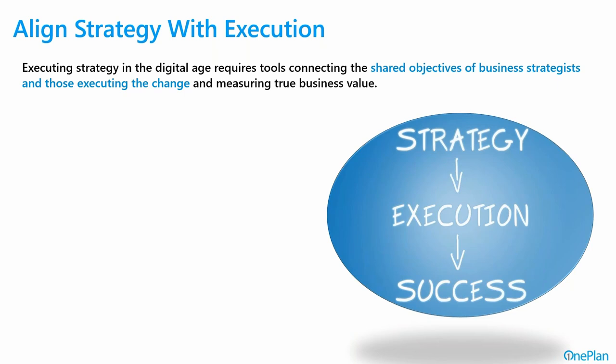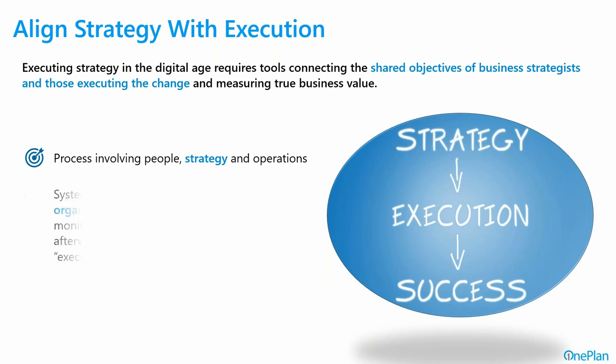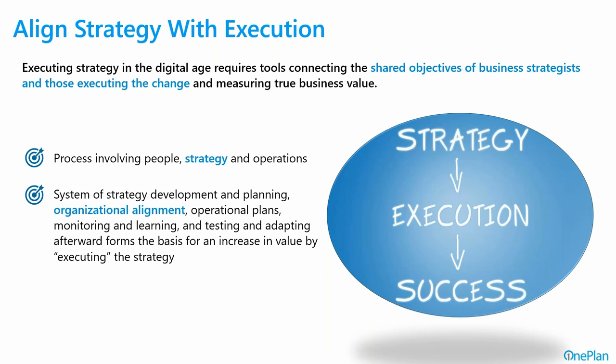Now, layering onto that adaptive piece of bringing disparate tools and methodologies together: the modern need with limited resources and funding is to make sure we're working on the right things. We want to connect the shared objectives of business strategists and leaders with those executing the change, ensuring what we're working on is helping drive the results that fulfill our leaders' strategies. This involves people, strategy, and operational execution — developing strategy, planning and aligning organizations around that strategy, putting operational and project plans in place consistent with the strategy, and then monitoring and adapting through execution to increase value.